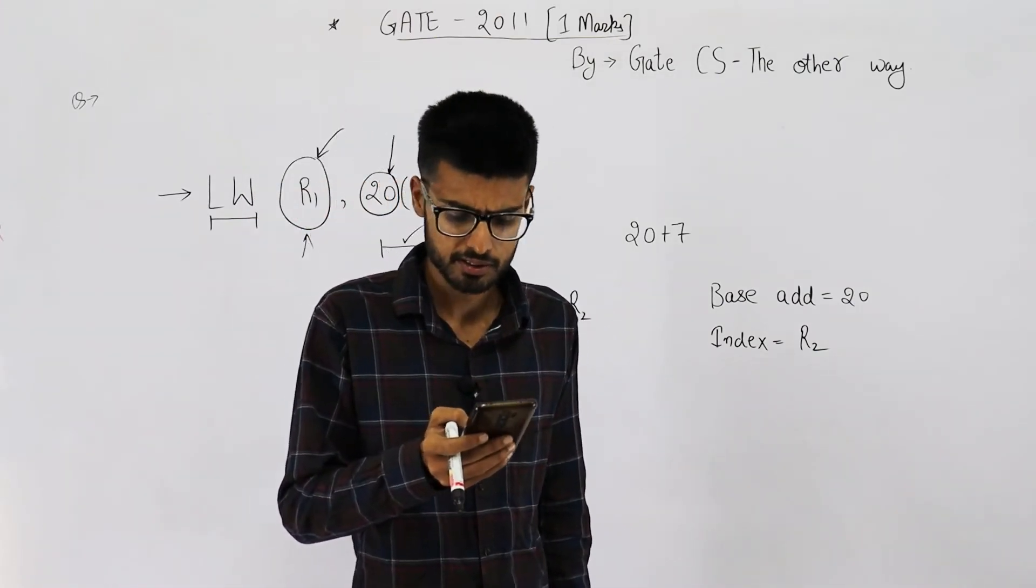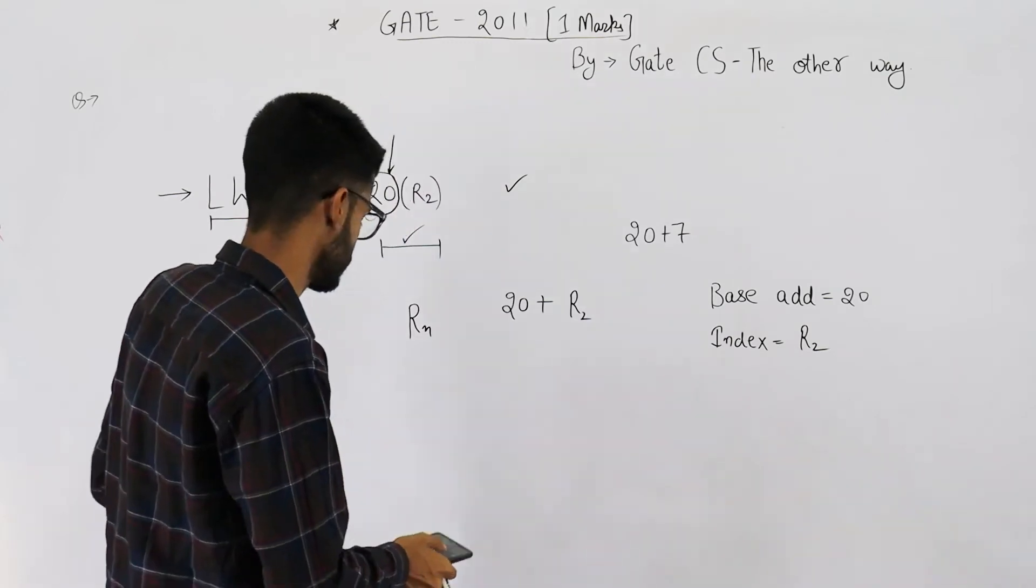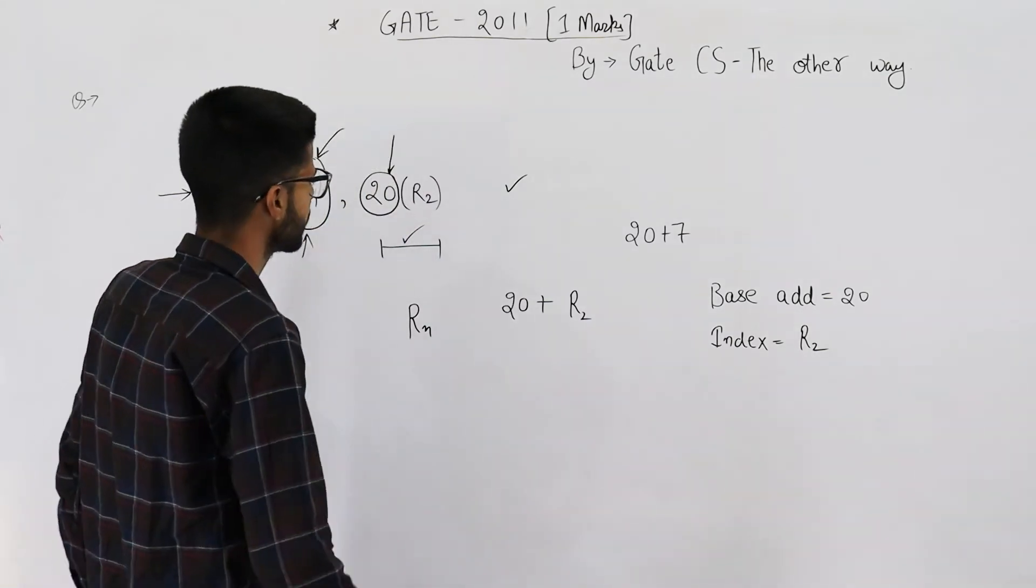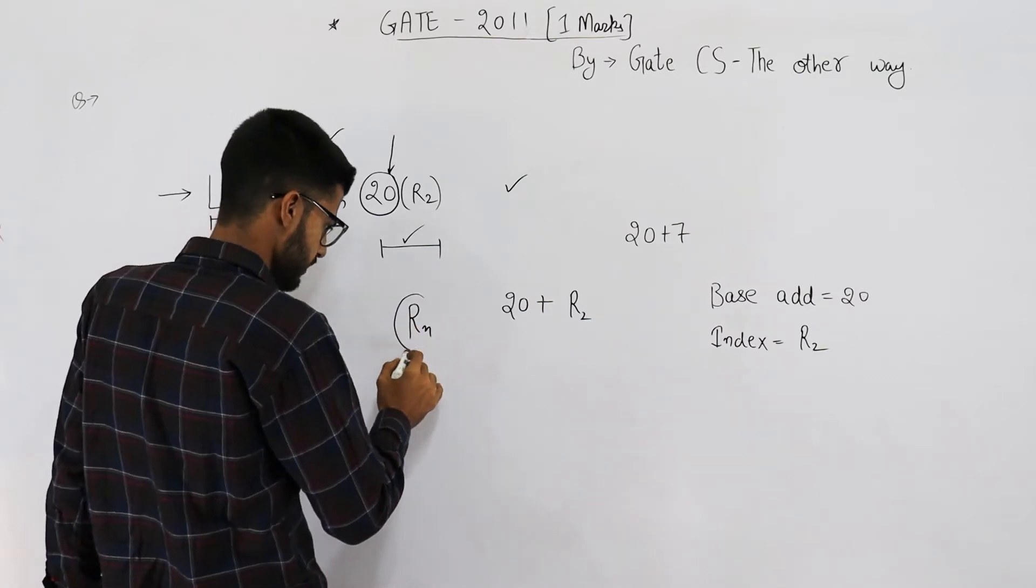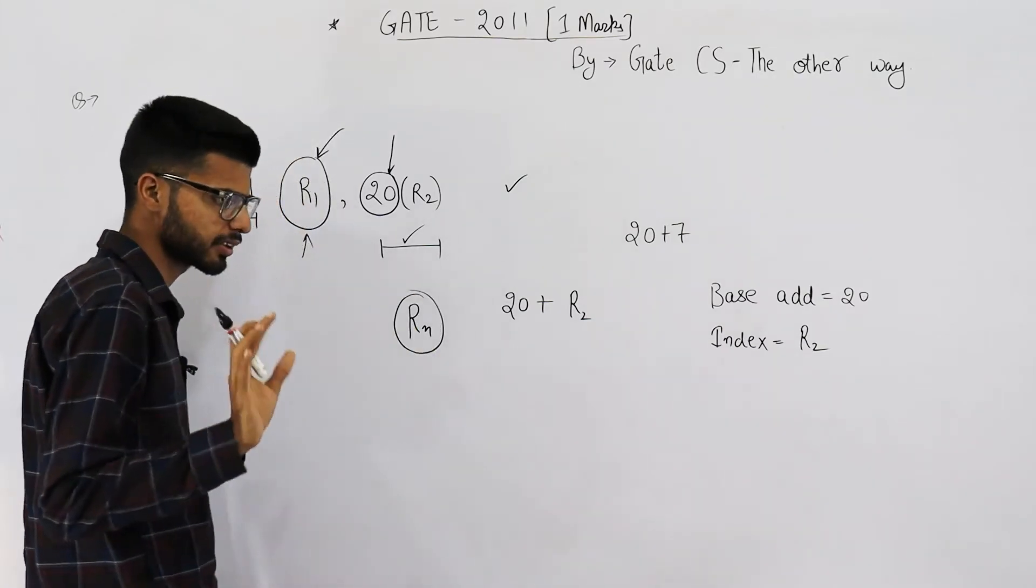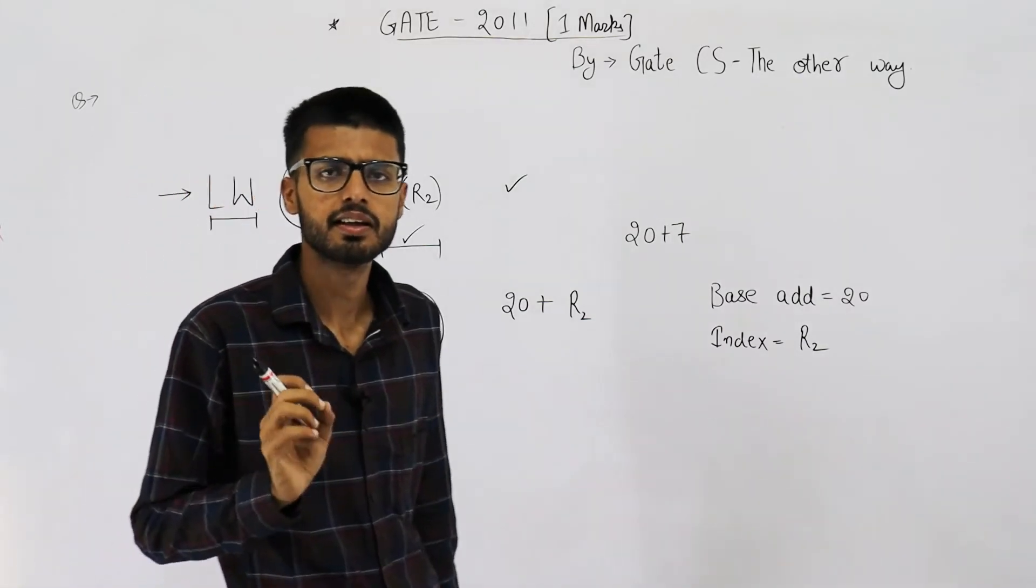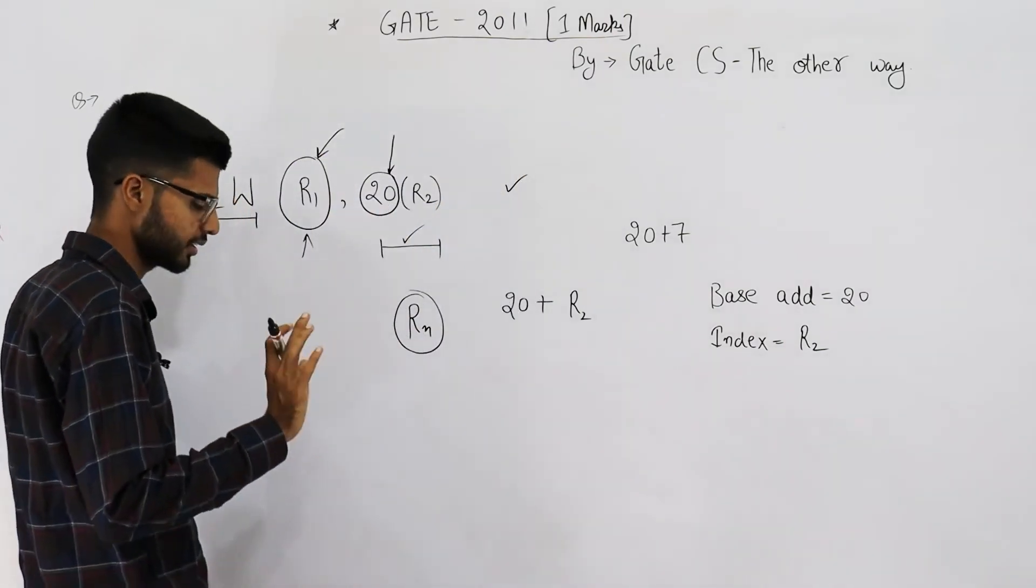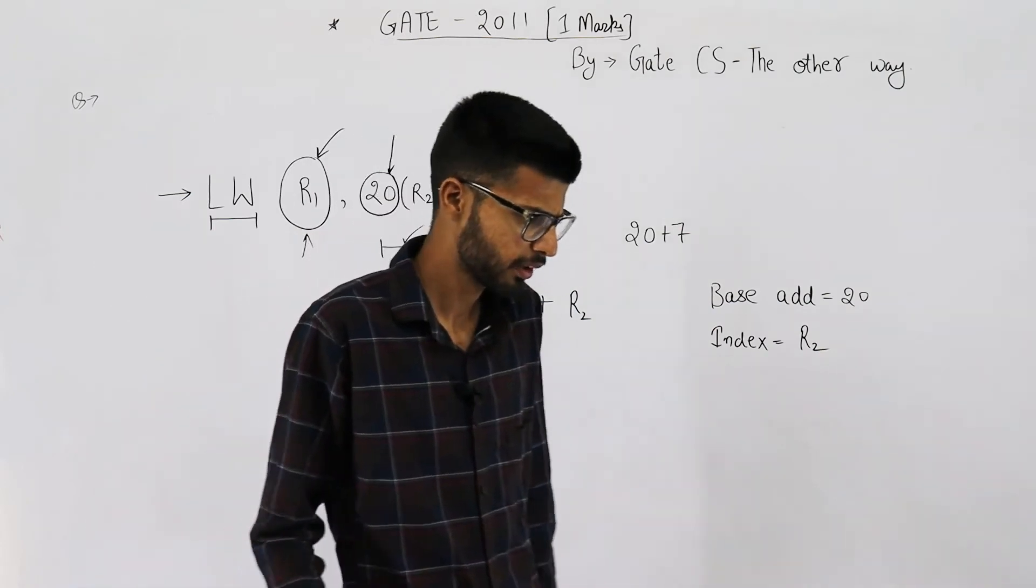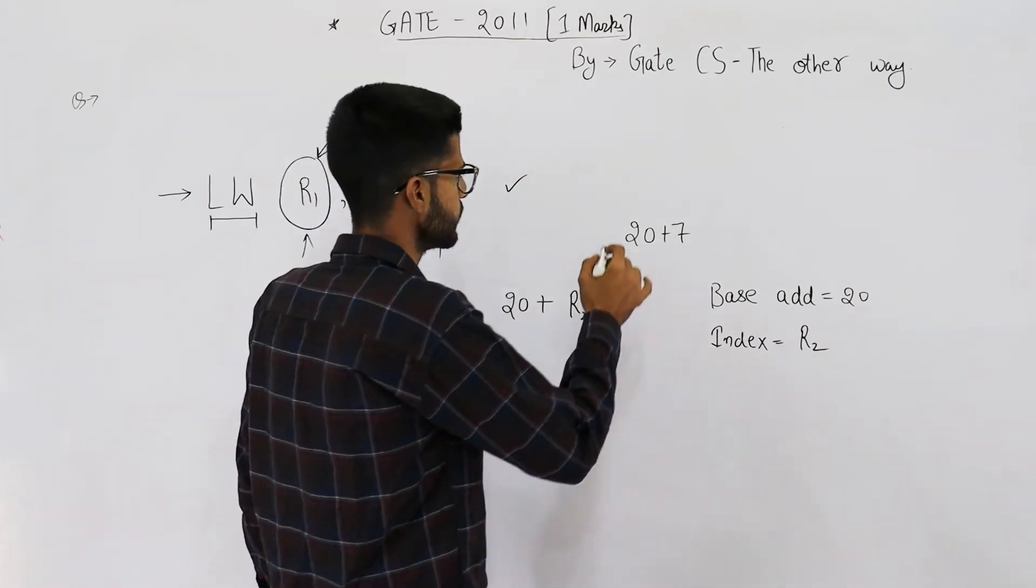C part is register indirect scaled addressing. It's not also register indirect. Because in register indirect what happens? We specify name of a register, but this register instead of containing the data contains the address of memory location. So it's not register indirect. And the word scaled.